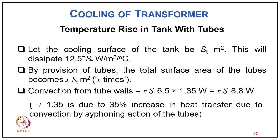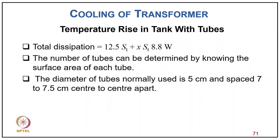For temperature rise in a tank with tubes: let the cooling surface of the tank be ST m². This dissipates 12.5×ST W/°C. With tubes of surface area X×ST m², convection from the tubes = X×ST×6.5×1.35 = 8.8×X×ST W/°C (the 1.35 factor is due to 35% increase in heat transfer from siphoning action). Total dissipation = (12.5 + 8.8X) × ST W/°C.